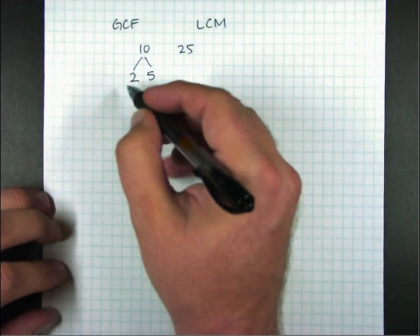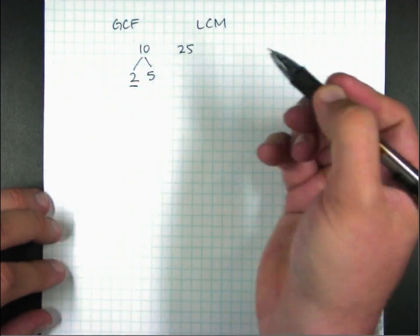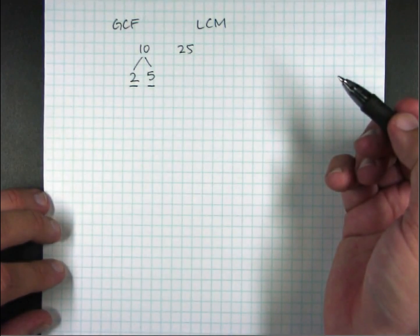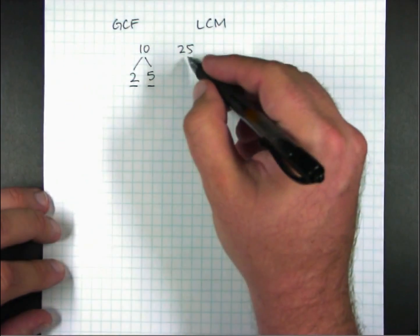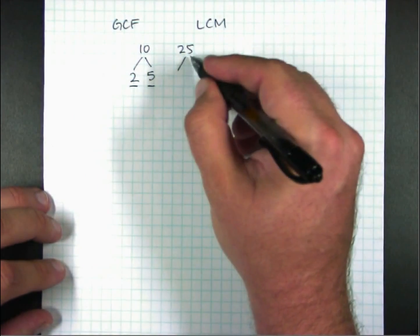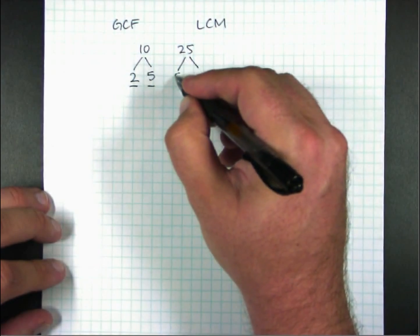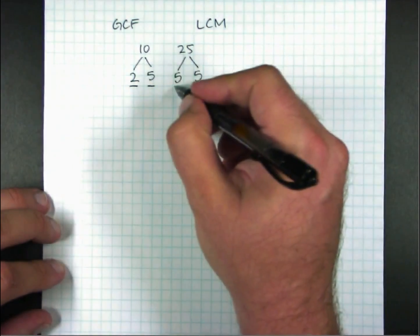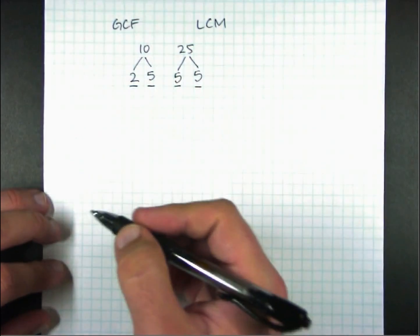2 is a prime number, so I'm going to underline it, and so is 5. So I'll underline it as well. And that tells me to stop. For 25, its two factors are 5 and 5. And since 5 is a prime, I will underline them both.